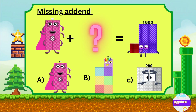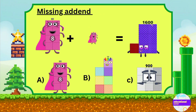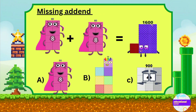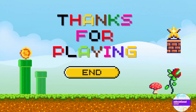Find the missing addend: what number do we add with eight hundred so the answer is sixteen hundred? Yes, it is eight hundred — eight hundred plus eight hundred equals sixteen hundred. Thank you for playing, hope you like the video!